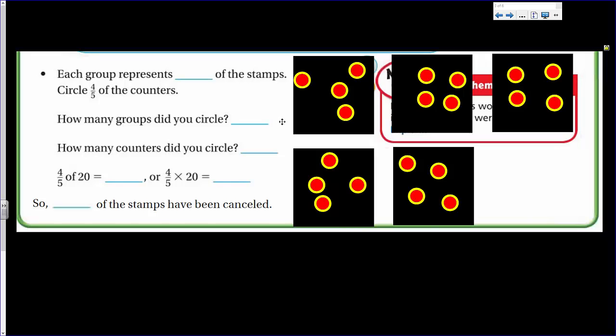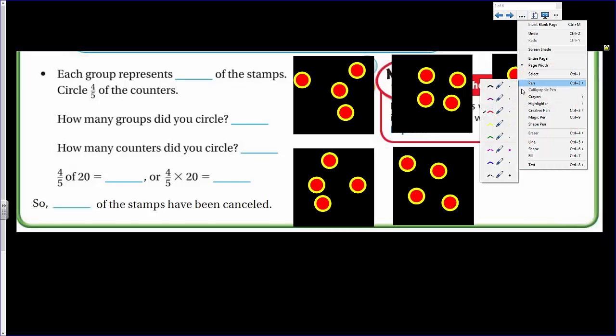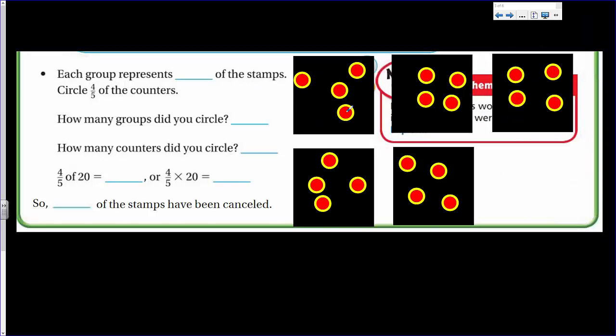Now it says each group represents blank of the stamps. Circle four fifths of the counters. So each group represents one fifth of the stamps. And then here it says how many groups did you circle? I'm going to be circling four of them. Here's one fifth of the group: one fifth, two fifths, three fifths, four fifths, five fifths. How many groups did you circle for the four fifths? One, two, three, four. It would be four groups.